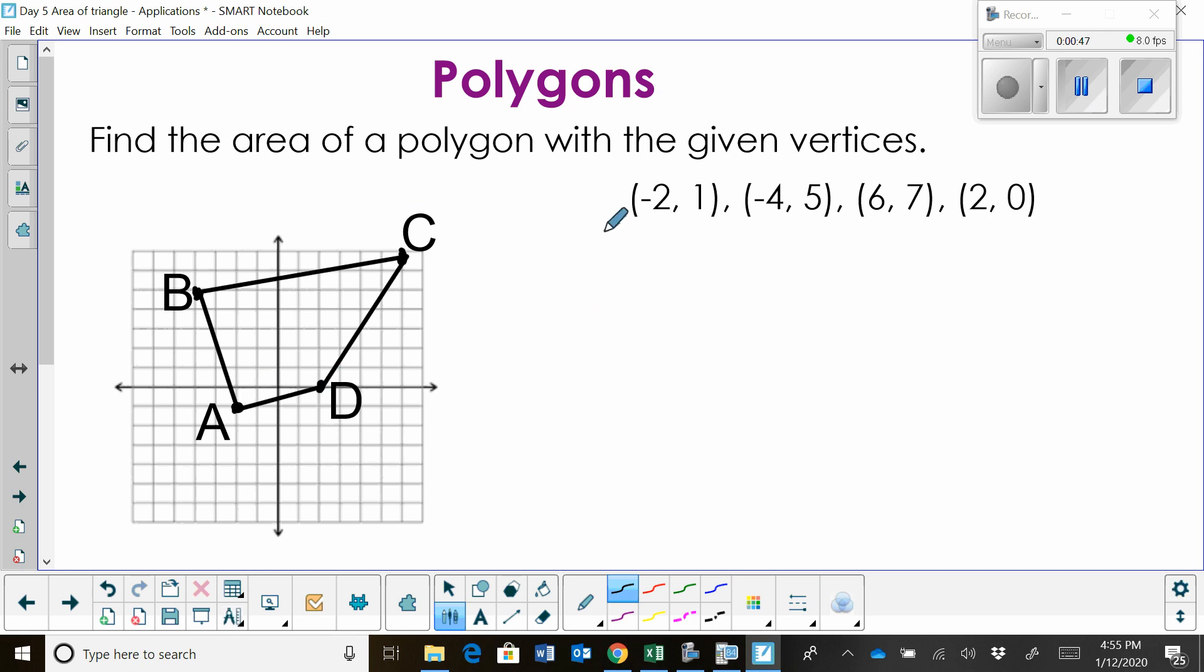We've got A, B, C, and D and here are the ordered pairs for each one of these. And what you want to do is plot them and make sure they actually connect to be a solid figure because sometimes you have to reorder these to make it into a figure.